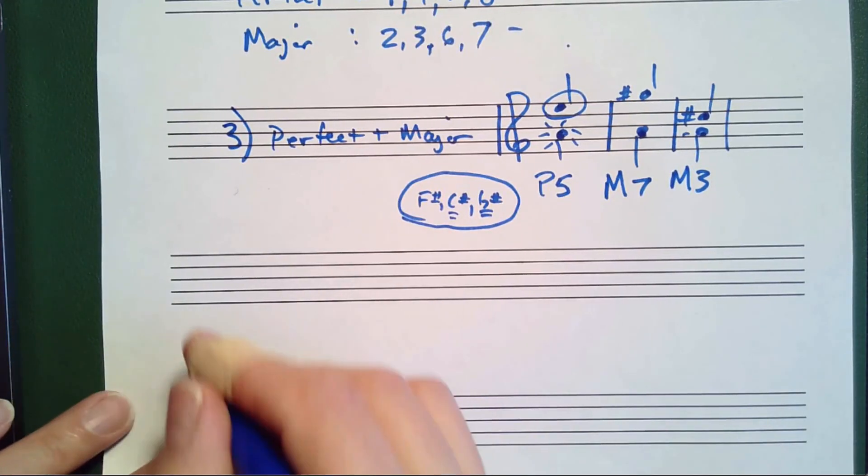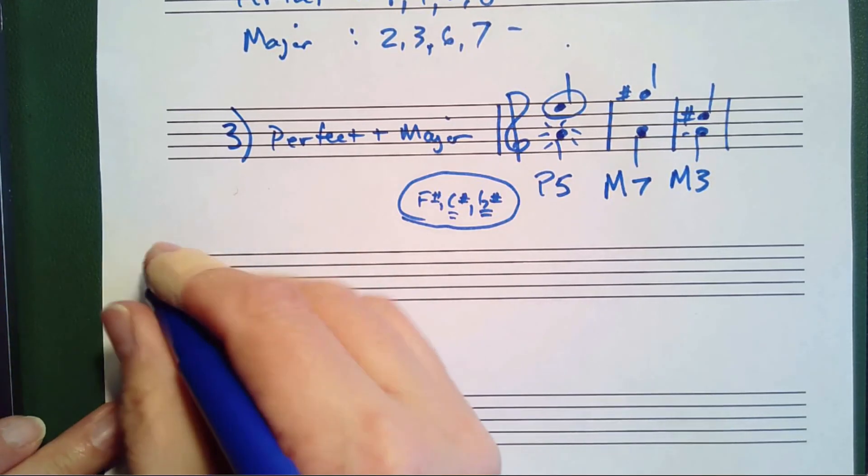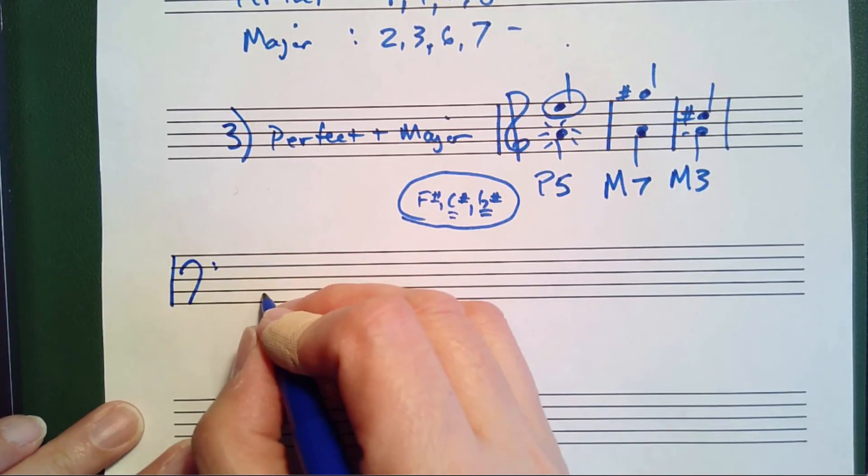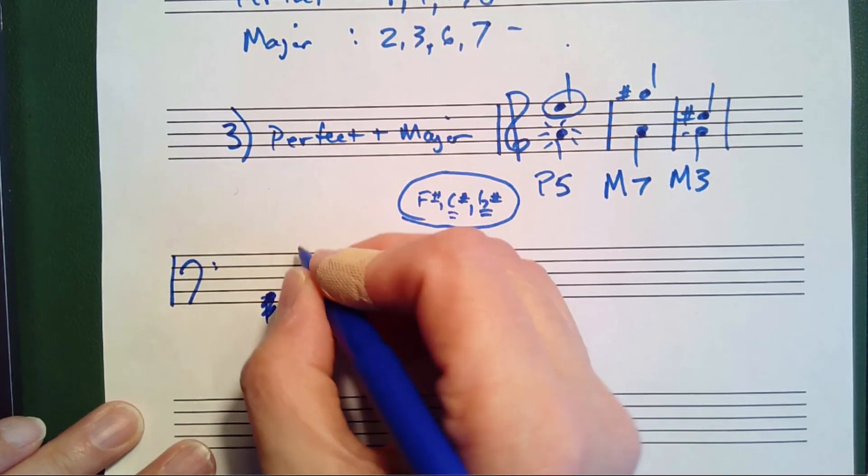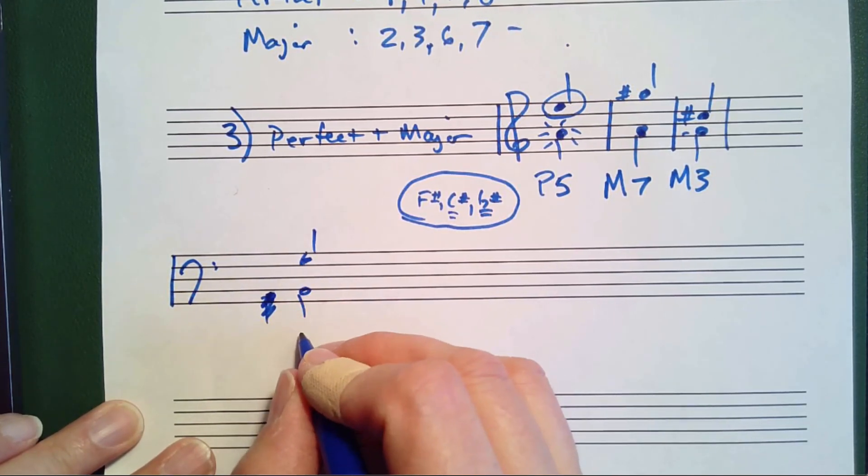Let's do a few identification that are not just all the same bottom note. What if I do B to G. B to G is B, C, D, E, F, G. That's six.